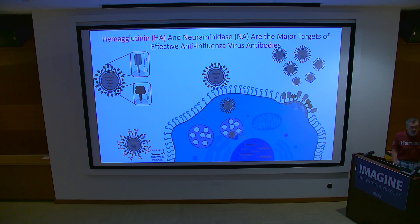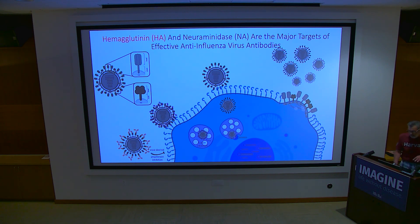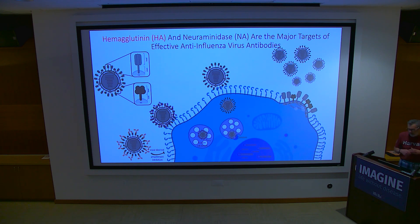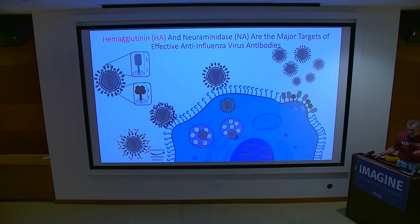Antibodies to hemagglutinin in the globular domain block the interaction with sialic acid. These are the most efficient neutralizing antibodies — the ones we all think are the best to make. There's also a newer set of antibodies against the conserved part of the HA called the stem. People got really interested when they started cloning human antibodies and found these stem antibodies are actually very common, not rare.